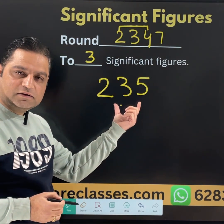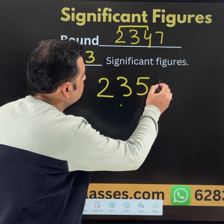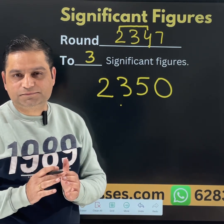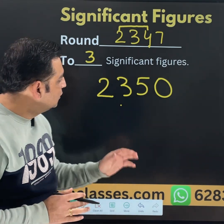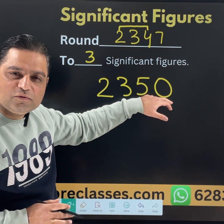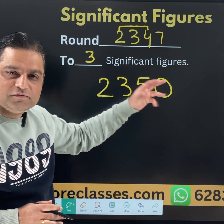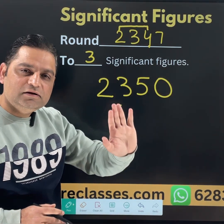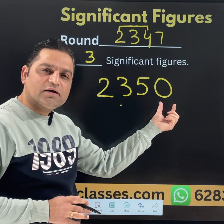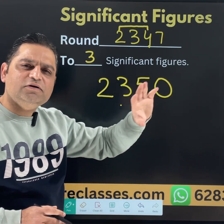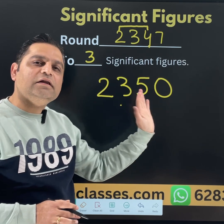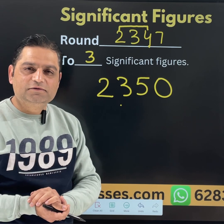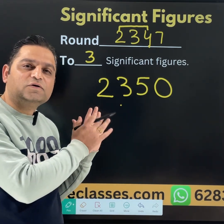Now 3 figures are completed. At the end we will place 0. Do remember the rule: ending zeros will not be counted in the significant figures. Starting from the first, second, and third — those 3 digits are counted. If we are talking about whole numbers, last zeros are not considered as significant figures. Even the starting zeros are also not considered.